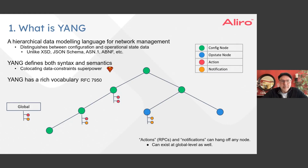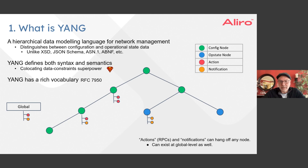First, what is YANG? YANG is a hierarchical data modeling language for network management. Data modeling languages are lower level than information models — a UML might be considered an informational model. It's hierarchical in the sense that you can see in the diagram on the right an area tree; it looks like a binary tree but it's actually an area, so there's a notion of a hierarchy.